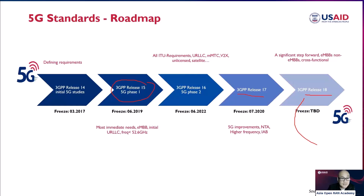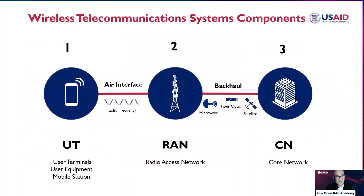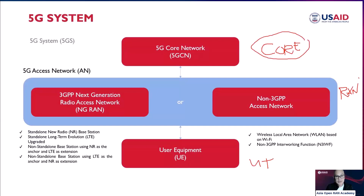Now let's look at the different architecture of the 5G system. The 5G system architecture is divided into three major parts: the 5G Core Network, the RAN, and the user terminals. When we talk about 5G, it still follows the same concept — only the names and functionality change. The core is called the 5G Core Network, or 5GCN.